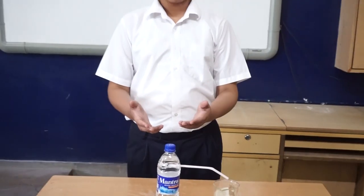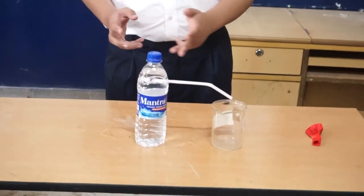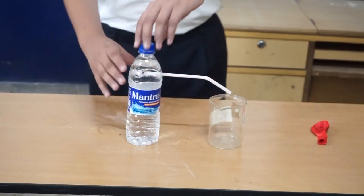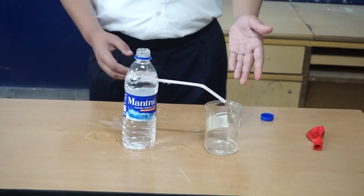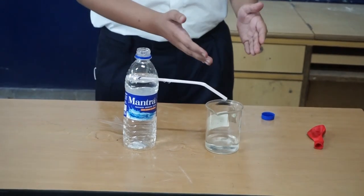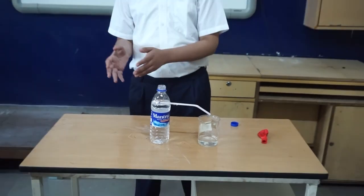I am Riyansh Kataria from Standard 8. And today, we are going to do an experiment on water fountain. So, as you can see, when the lid is off, the water does not flow into the beaker. But, let's see what happens when we open the lid. So, as you can see, the water is going from high pressure to the lower pressure. This shows that the fluids flow from high pressure to the lower pressure.